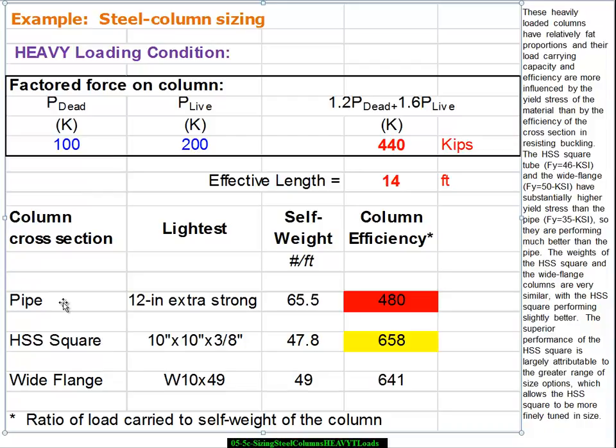Pipe is way down around 35. So that's why I've shown in red here the pipe is clearly the poorest performer.